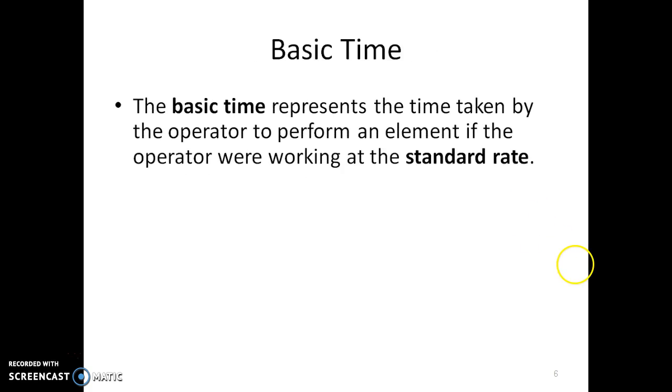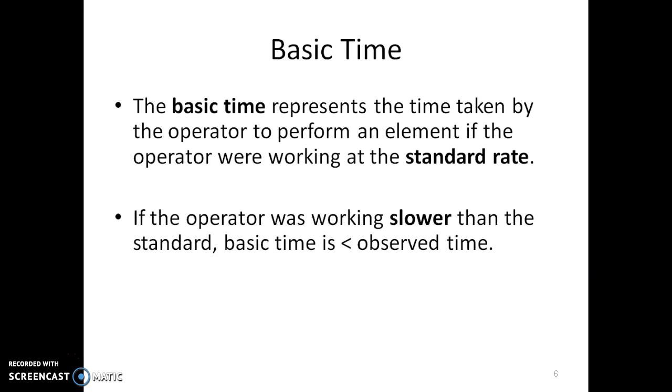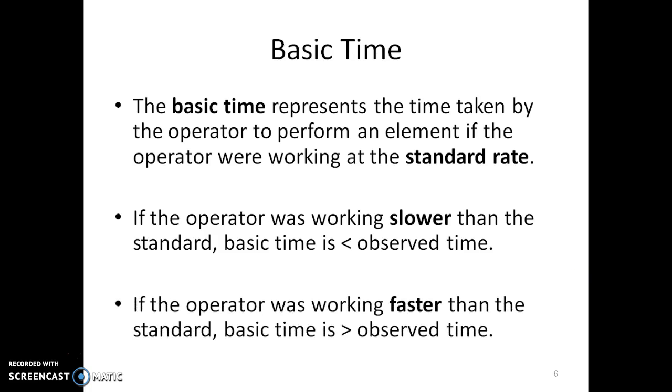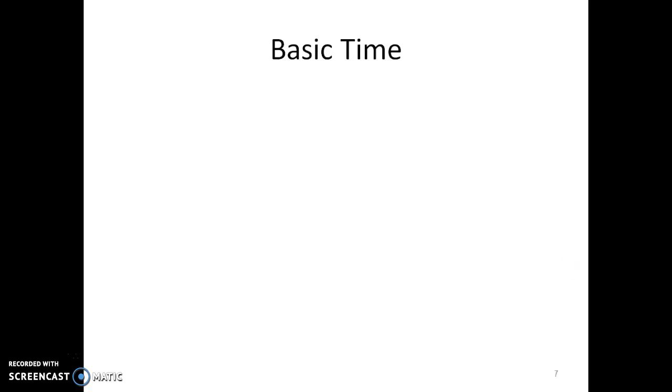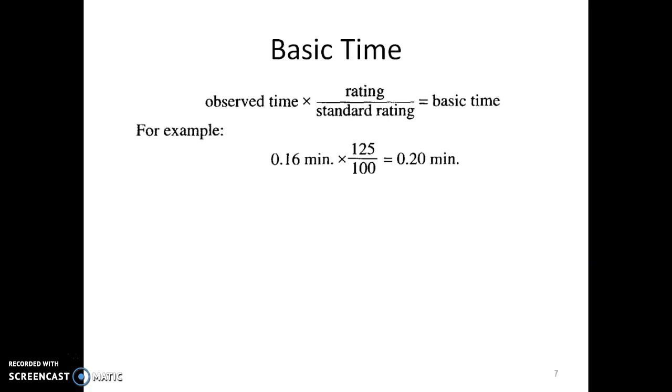Basic time represents the time taken by the operator to perform an element if the operator were working at the standard rate. If the operator was working slower than the standard, basic time is less than the observed time. If the operator was working faster than the standard, basic time is greater than the observed time. Hence, the rating factor is involved in the calculation of basic time. Basic time is obtained by multiplying observed time with the rating factor.